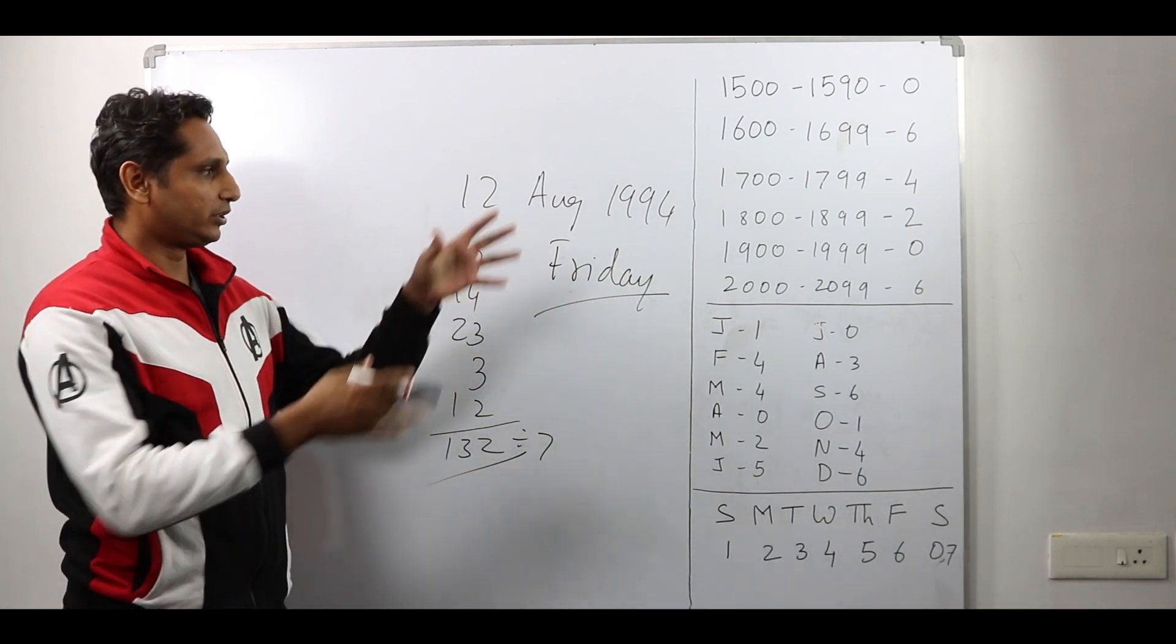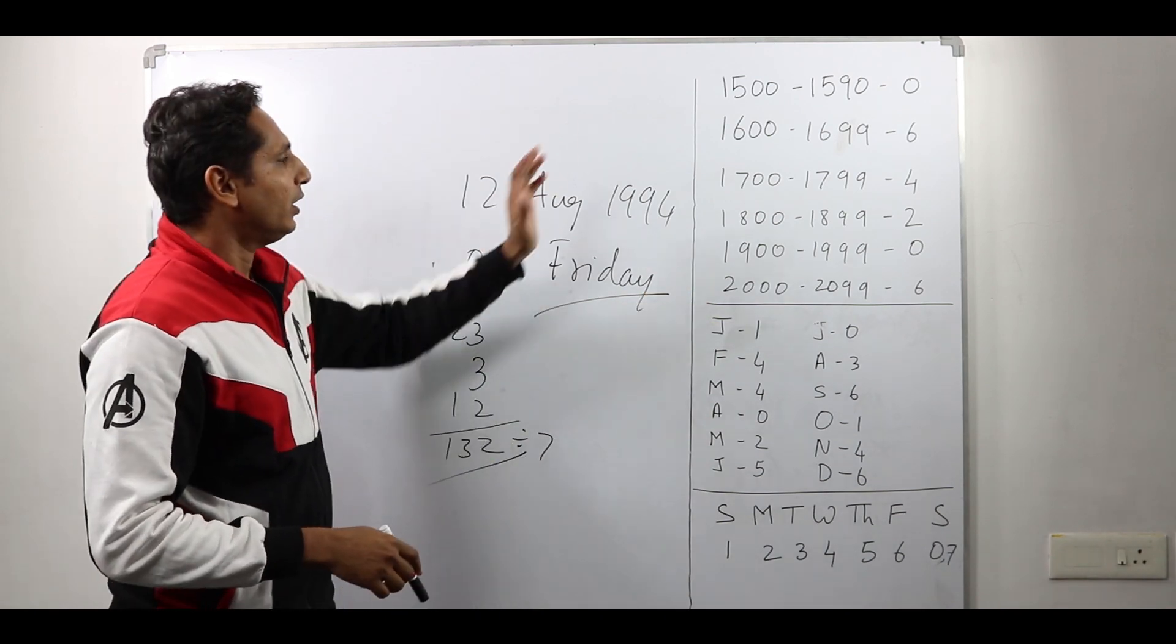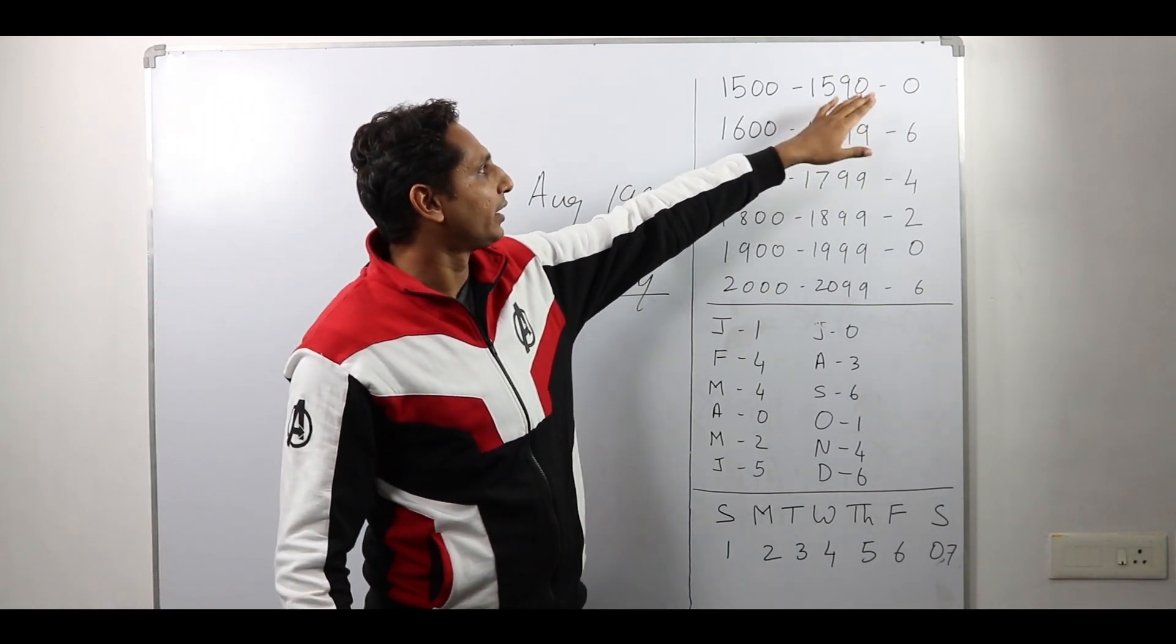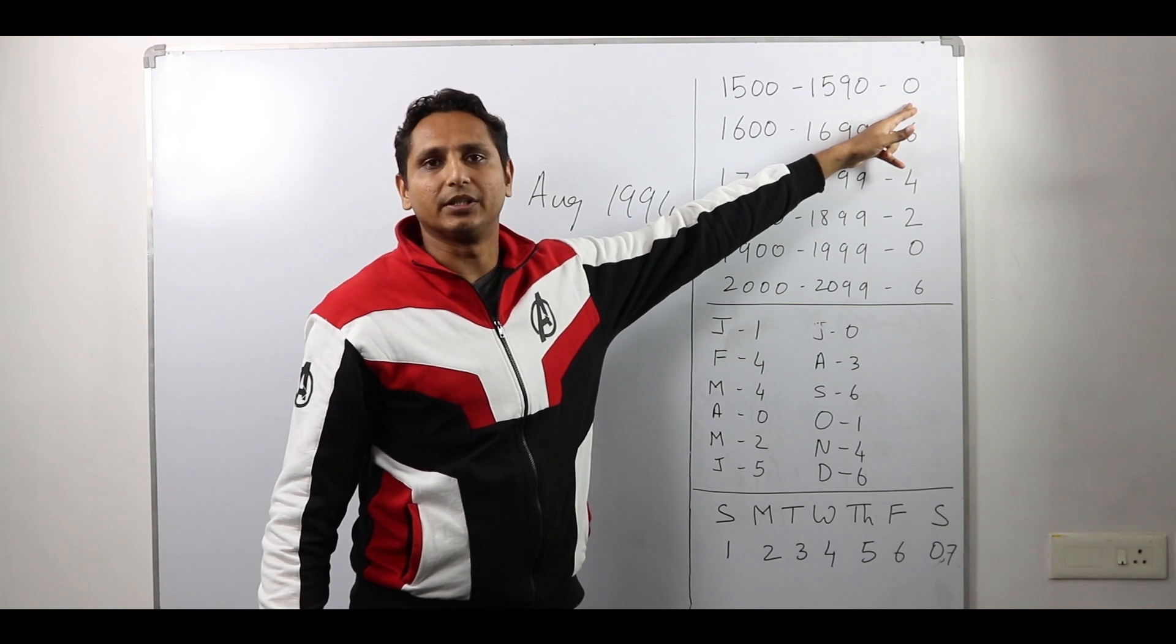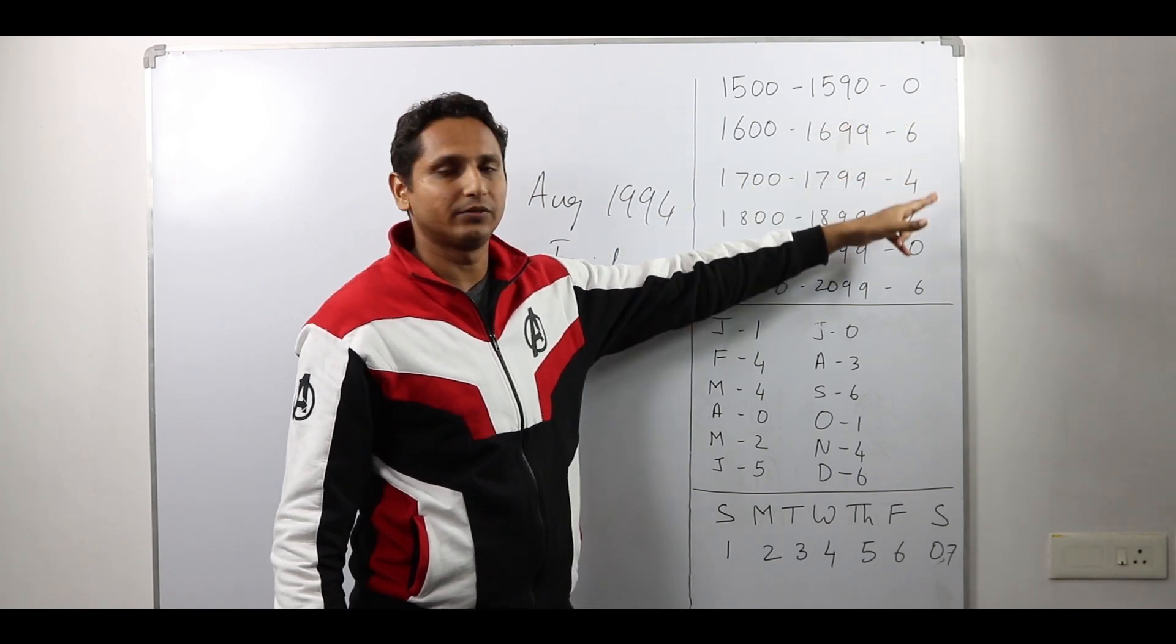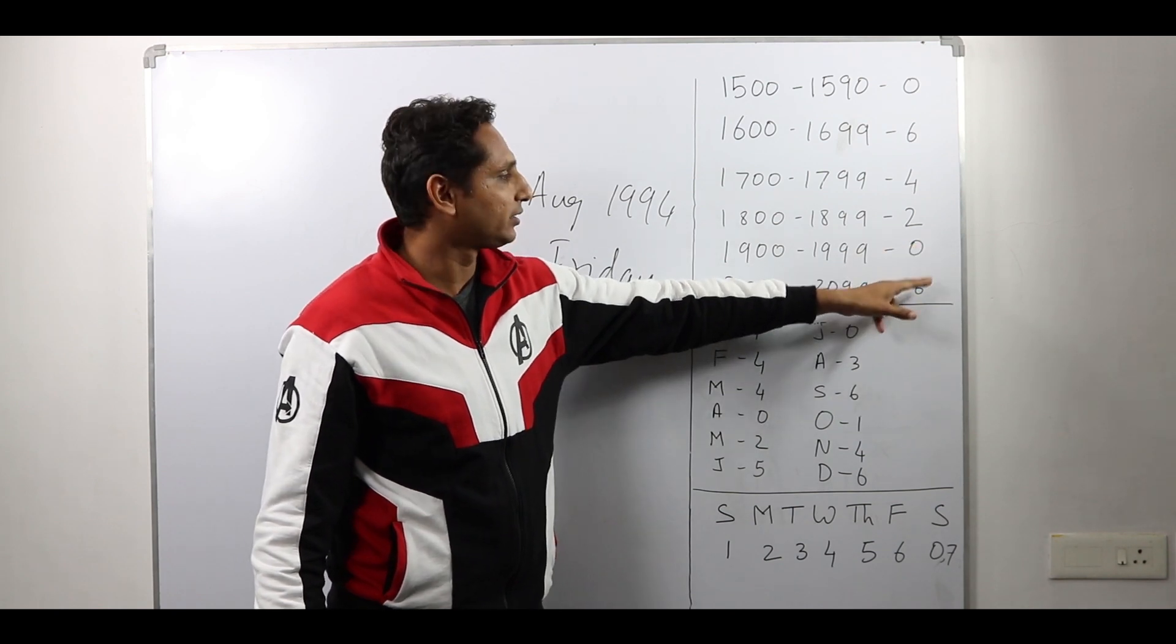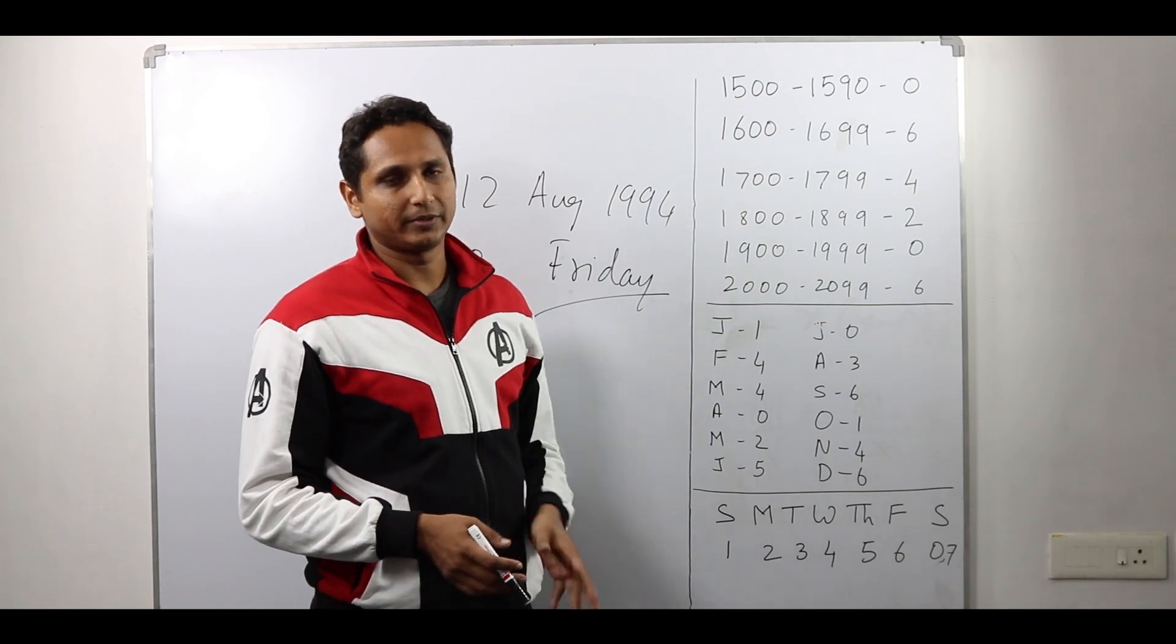Now I will quickly explain how these codes work and how do you remember. Look at the years part. There is a pattern here. Starting from 1500 to 1590, it starts with 0. After which it is 6, 4, 2 and then it repeats. It's 0 again 6. So this way you can remember the code for the centuries.